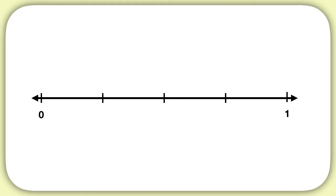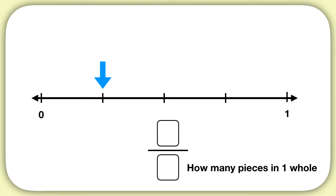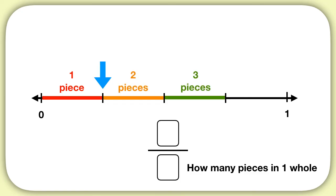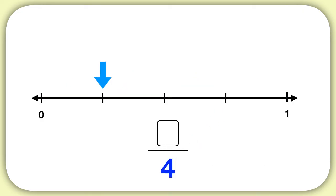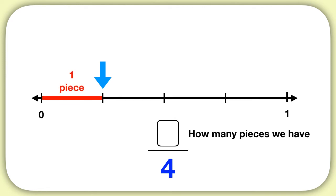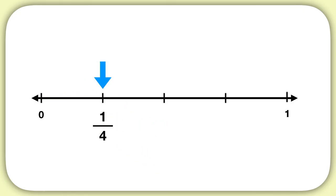What fraction represents this dash on the number line? In your fraction, start by looking for the denominator — how many pieces are in one whole? You can count 1, 2, 3, 4 pieces between 0 and 1. So the denominator is 4. Then we can find our numerator, which tells us how many pieces we have. In this number line, there's only one piece before we reach our arrow. So the numerator in this fraction is 1. This dash represents the fraction 1 fourth.